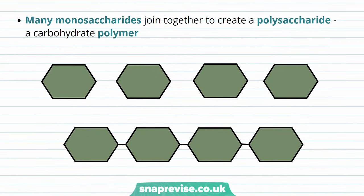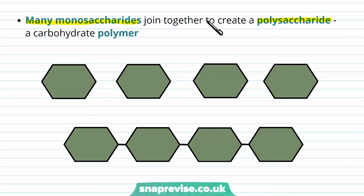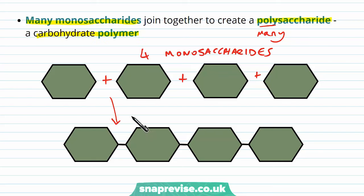If we add many more monosaccharides into a chain — more than two, three, four — we end up joining them to make a polysaccharide, where 'poly' means many. So this is the polymer of a carbohydrate. If we have four monosaccharides joined together, each gets its own bond between each monosaccharide, and we end up with a polysaccharide. It's basically just changing the prefixes of the words.